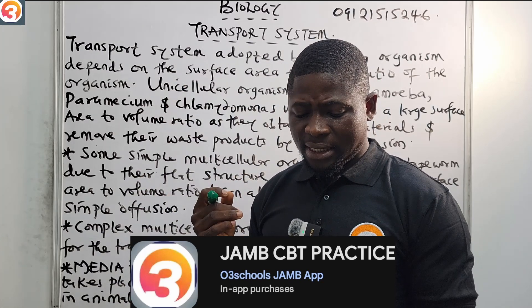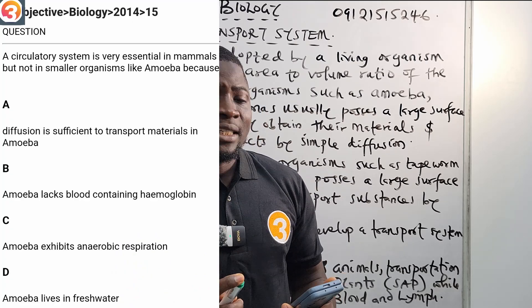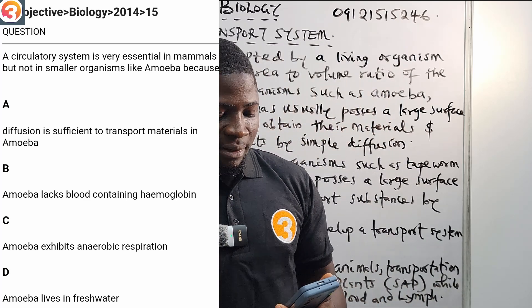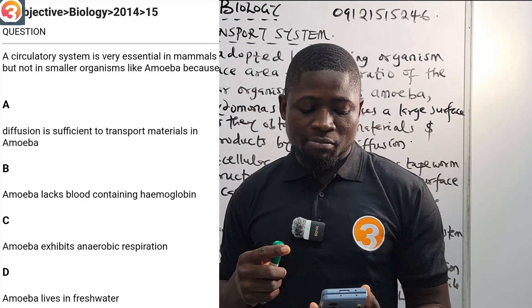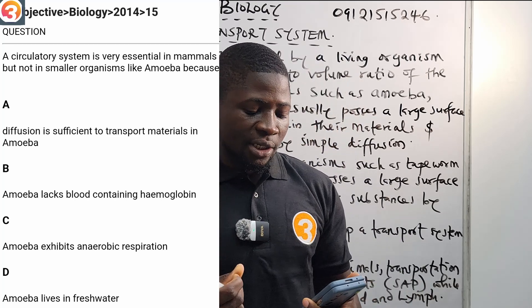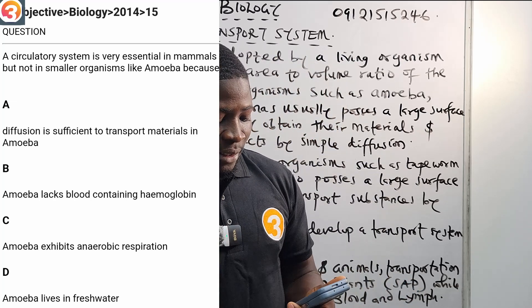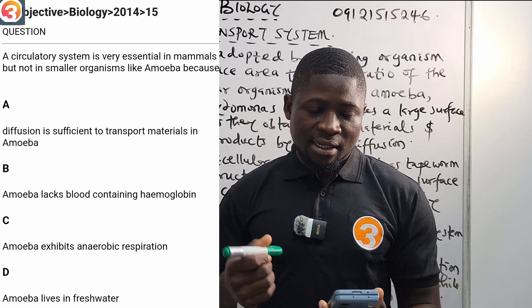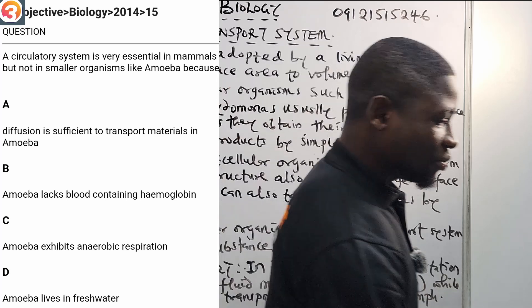Let us see a JAMB past question from today's topic. This is Biology 2014, Question 15: 'A circulatory system is very essential in mammals but not in smaller organisms like Amoeba because...' Option A says diffusion is sufficient to transport materials in Amoeba. Option B says Amoeba lacks blood containing haemoglobin. Option C says Amoeba exhibits anaerobic respiration. Option D says Amoeba lives in fresh water.